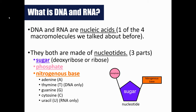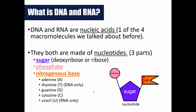Both DNA and RNA are made of what we call nucleotides. A nucleotide contains three parts: a phosphate, a sugar, and a nitrogenous base. We have several options for those nitrogenous bases: adenine, thymine — which we only find in DNA — guanine, cytosine, and uracil — which we only find in RNA.